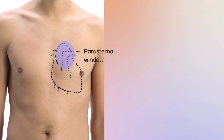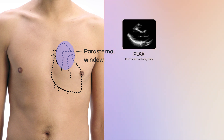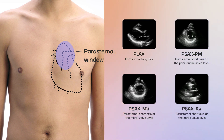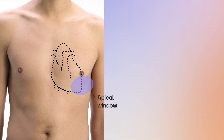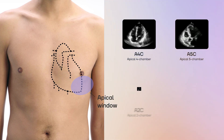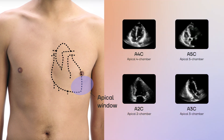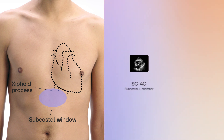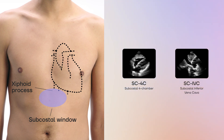The parasternal window is located on the lower left side of the chest, near the left pectoral area. From this window, we aim to capture four key views: the parasternal long axis, the parasternal short axis at the papillary muscles level, at the mitral valve level, and at the aortic valve level. The apical window is located just below the left nipple, near the apex of the heart. From this position, we aim to capture four reference views: apical four-chamber, five-chamber, two-chamber, and three-chamber. Finally, the sub-costal window is located just below the sternum, under the xiphoid process. From this window, we aim to capture two reference views: the sub-costal four-chamber and the sub-costal inferior vena cava.